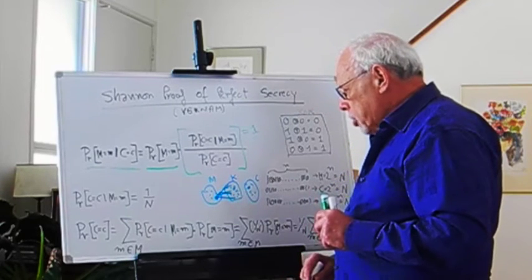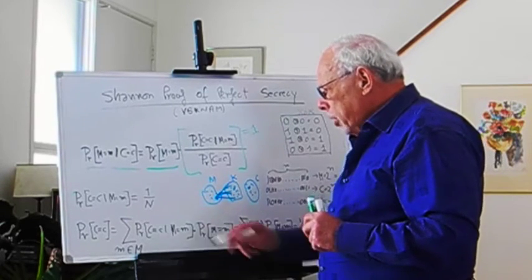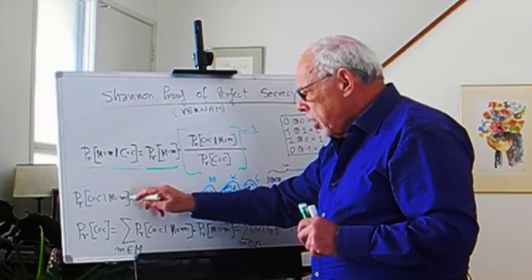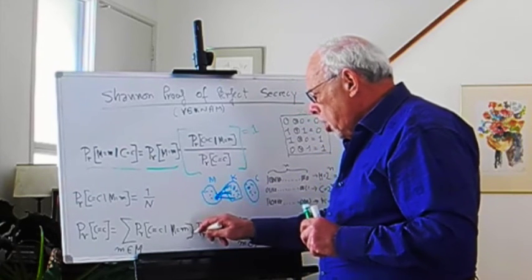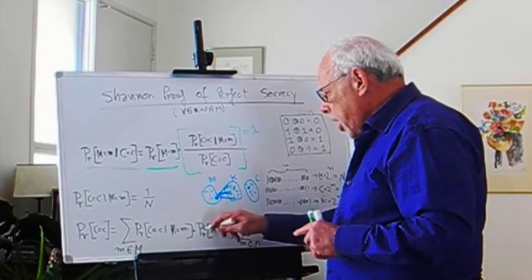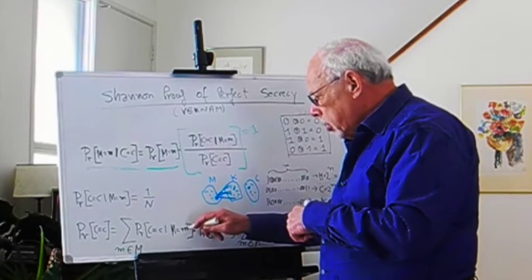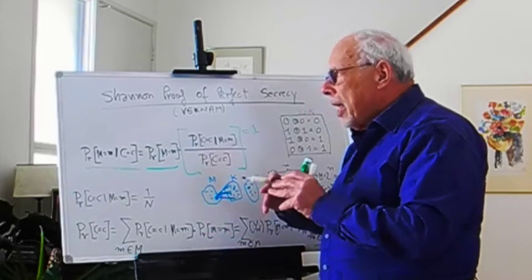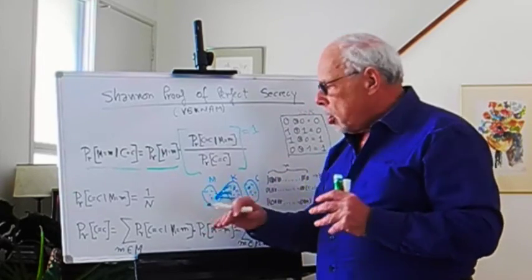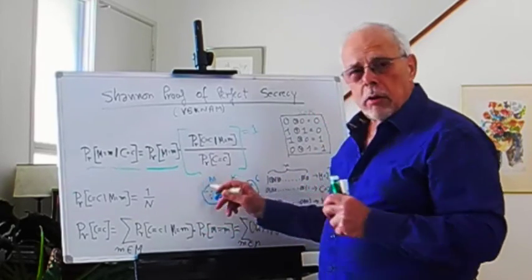Now here, what Shannon says: why don't we take the same expression here that we have here, multiply it by the chance that the message will be this particular m, and then add those probabilities over all the possible messages?